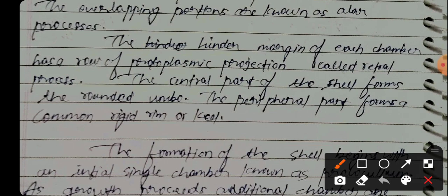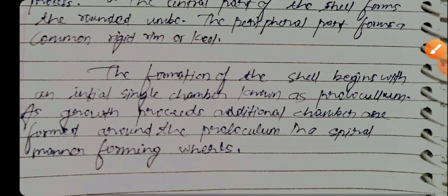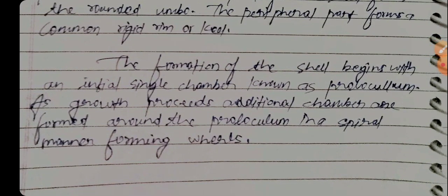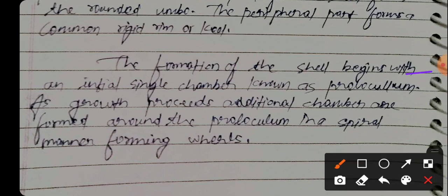The hinder margin of each chamber has a row of protoplasmic projections called retral processes. The central part of the shell forms a rounded umbo. Shell formation begins with the initial single chamber known as the proloculum.